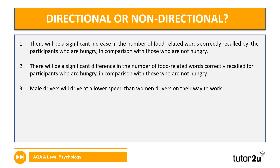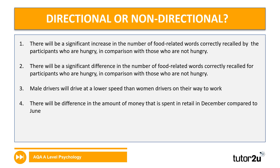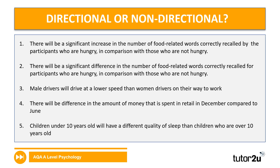Number three: male drivers will drive at a lower speed than women drivers on their way back to work. Again, we've got a directional hypothesis because the lower speed is specified — the direction of the results. Number four: there will be a difference in the amount of money that is spent in retail in December compared to June. That's a non-directional hypothesis — we've got a statement of there will be a difference, but not what that difference is going to be. And number five: children under 10 years old would have a different quality of sleep than children who are over 10 years old. Again, a non-directional hypothesis — it's saying that the quality of sleep will be different but hasn't specified in what way it will be different.